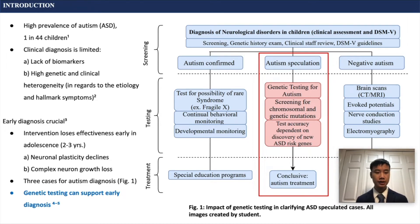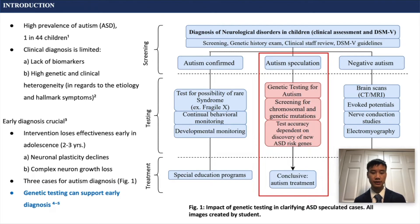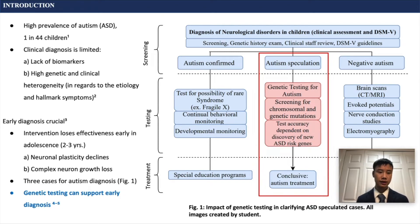Early diagnosis for autism is essential, as cognitive therapy intervention loses its effectiveness during an early stage of adolescence, and there are two main biological reasons for this. The first is that neuronal plasticity declines, and secondly, the opportunity for complex neuron growth is lost.